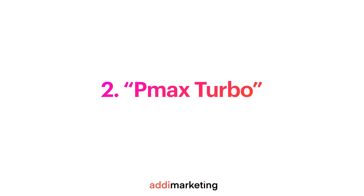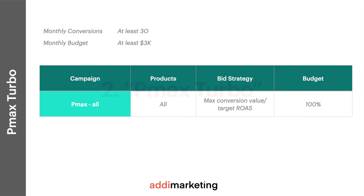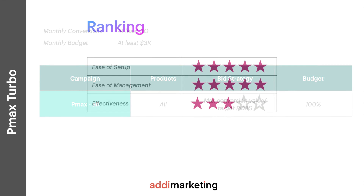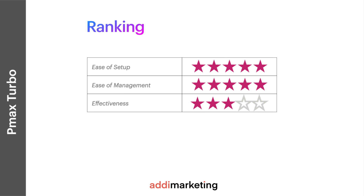Pmax Turbo: when you have at least 30 conversions per month, it makes sense to try Performance Max. It's a very similar setup — put all your products in a single Pmax campaign and run a max conversion value bid strategy. It will allow you to stay within your budget when counted monthly. The Pmax Turbo is the easiest to set up and manage among all the structure examples and can deliver better than average performance.